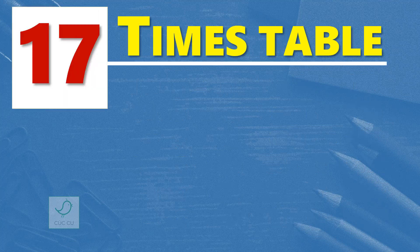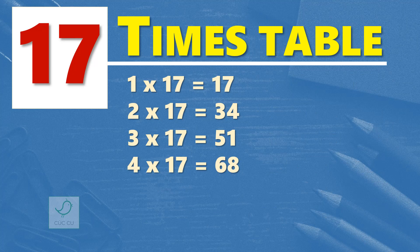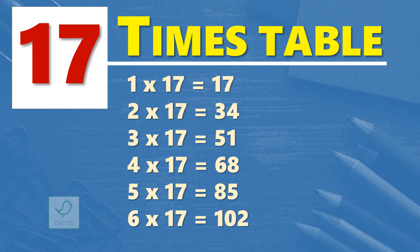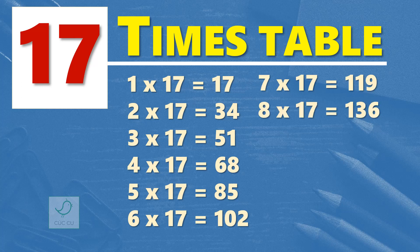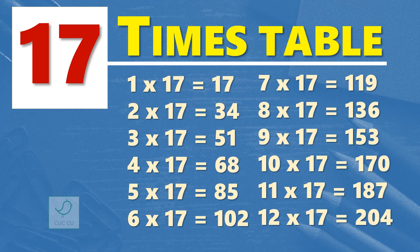17 times table. 1 times 17 is 17. 2 times 17 are 34. 3 times 17 are 51. 4 times 17 are 68. 5 times 17 are 85. 6 times 17 are 102. 7 times 17 are 119. 8 times 17 are 136. 9 times 17 are 153. 10 times 17 are 170. 11 times 17 are 187. 12 times 17 are 204.